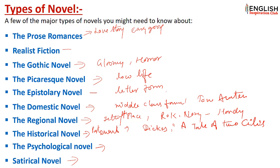You can take a screenshot of these novel types. We will talk about each type — Gothic, picaresque, epistolary, domestic, regional, historical, and psychological novels — in separate videos, where we will discuss related and important details and which novelists have written notable examples.